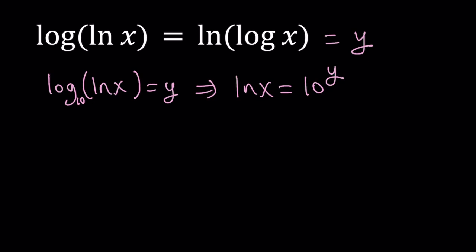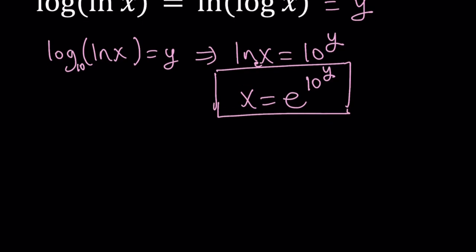Since we are trying to get x in terms of y or y in terms of x, we want to isolate. Obviously, in this case, we want to isolate x. We need to do e to the power of both sides. And since the base is e here, this gives us x equals e to the power 10 to the power y. Awesome. So this is our first step.